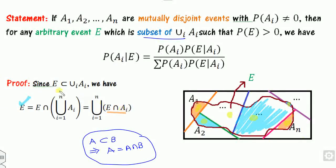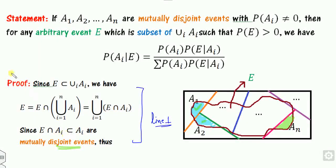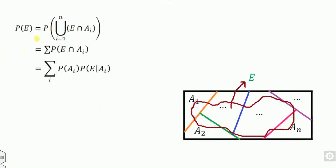Now, each E ∩ Ai is a subset of Ai. You can see that all these portions — this portion, this portion, this portion — are all disjoint from one another. So E = union of (E ∩ Ai), and since they are disjoint, you can take probabilities on both sides. By the addition rule: P(E) = sum of P(E ∩ Ai). This is line number one.